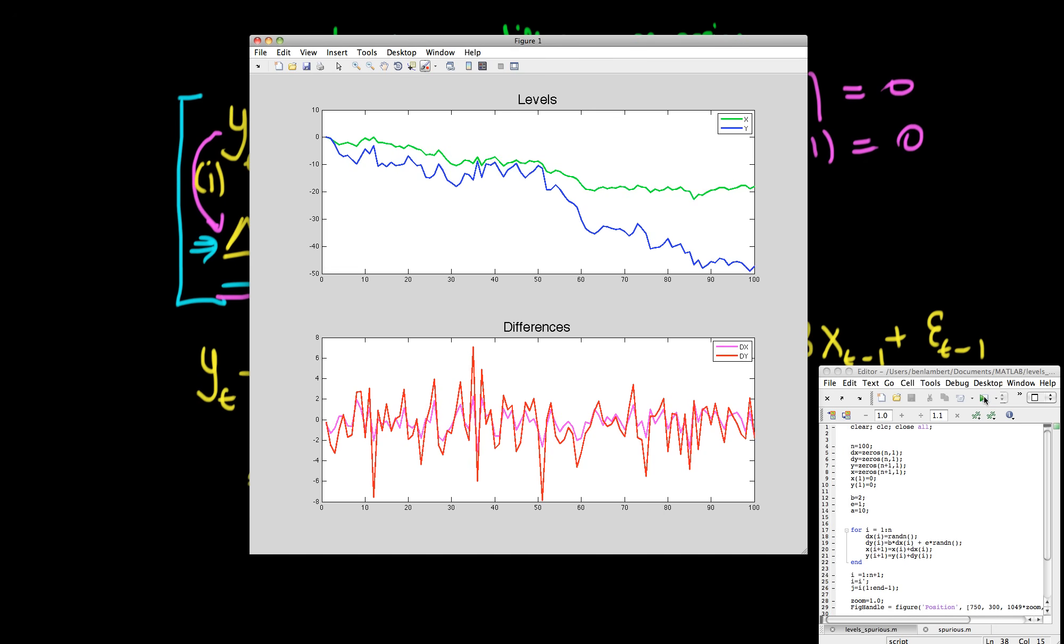On the top here we have the reconstructed values of the series of x and y. The green line is the x line, the blue line is the y line, and you can see that very much they are diverging from one another. They are very much not co-integrated with one another. There is certainly not a long-run relationship between y and x.